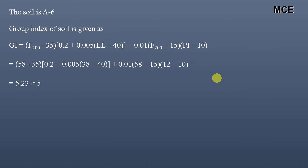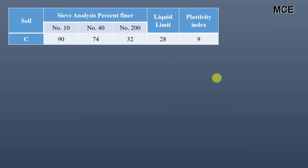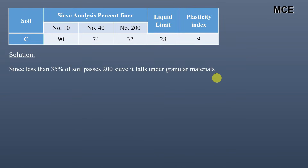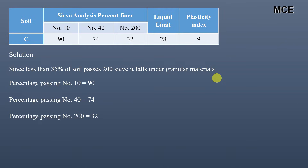The soil is A-6. The group index of this soil comes out to be 5, so the classification is A-6(5). For soil C, less than 35% — specifically 32% — of the soil passes sieve number 200, so it falls under granular materials. The percentage passing sieve number 10 is 90, sieve number 40 is 74, and sieve number 200 is 32. The liquid limit and plasticity index are 28 and 9 respectively.